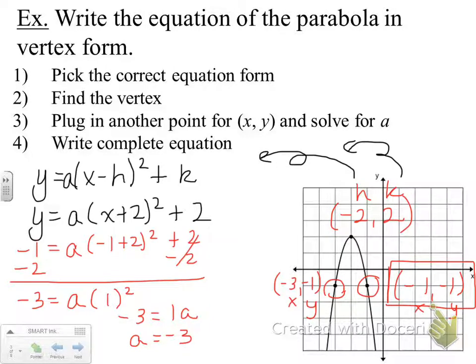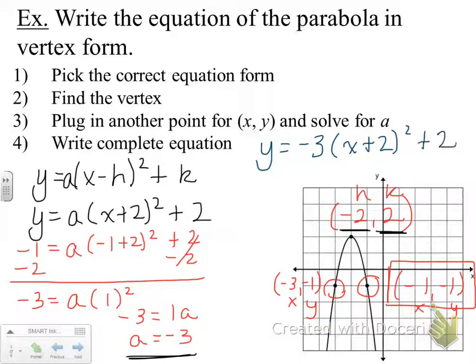Now, what I'm going to have to do here is put all of these pieces of information together. I want to plug in the h and k here and my a value and write a nice equation as my final answer. So putting all of that together, my equation is going to look like this: y equals negative 3 times x plus 2 squared, that's the h value, plus the k value of positive 2. And there you have your final equation in vertex form.